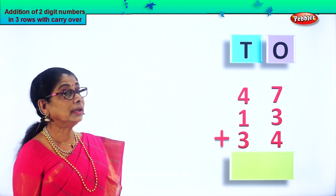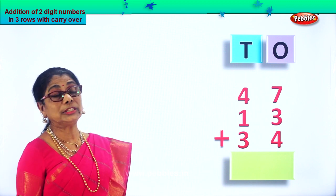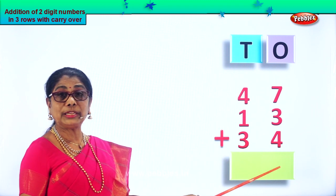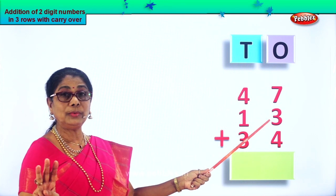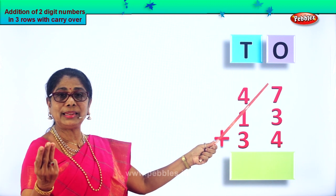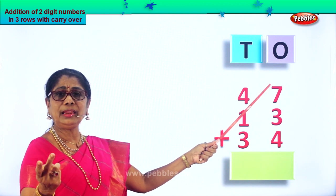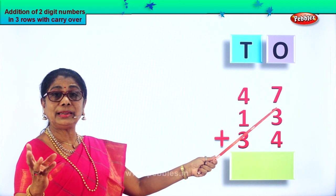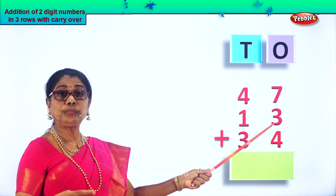We have three sets of numbers arranged in ones and tens order. Let's add all the ones in the ones place: seven plus three plus four. Seven ones plus three ones — seven in the mind, three in your fingers. After seven: eight, nine, ten. So seven plus three, we got ten ones.